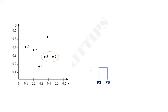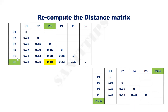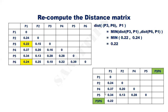This is the corresponding dendrogram. Since we have merged P3 and P6 into a cluster, we no longer require separate entries for P3 and P6. Instead, we write it as a single entry in the distance matrix. We need to recompute the distance from each point to the new cluster {P3, P6} using the single linkage method, where the distance between two clusters is the minimum distance between any two points in the two clusters. The distance between {P3, P6} and P1 is the minimum of d(P3,P1)=0.22 and d(P6,P1)=0.24, giving 0.22.